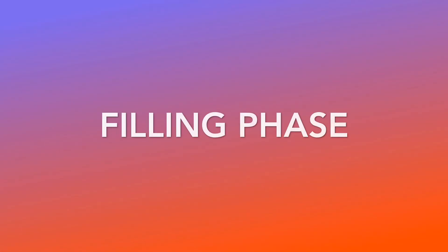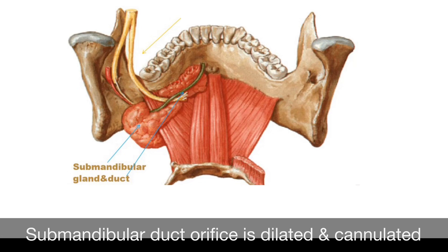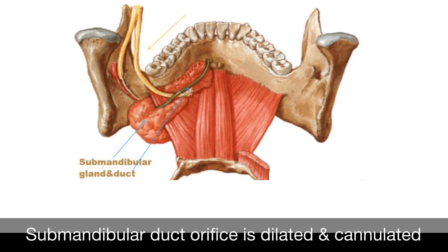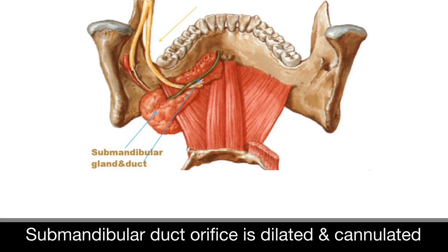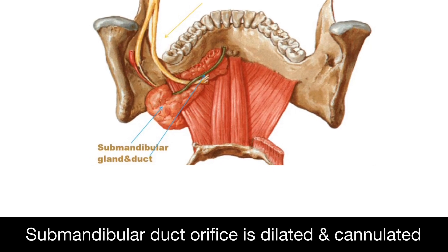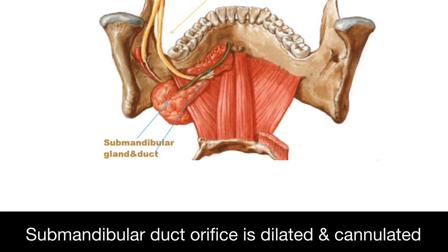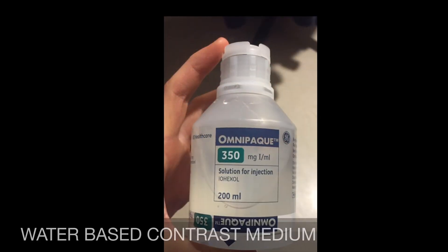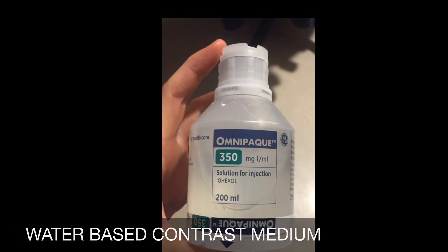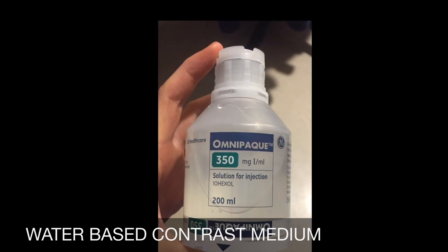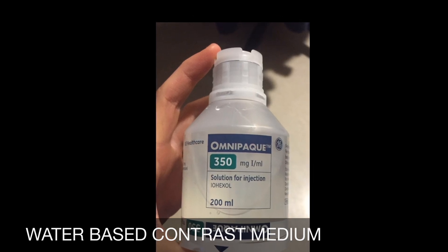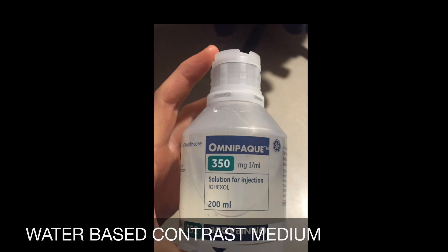The second phase is the most important phase, called the filling phase, in which the duct orifice is probed, dilated, and cannulated with the help of a sialographic cannula. In this particular case, we cannulated the left submandibular duct, following which the contrast medium is injected. Literature says we have to inject around 0.5 ml of contrast medium for the submandibular gland, but in this case we injected around 1.5 ml using a simple injection technique.